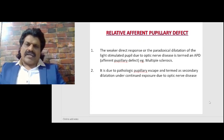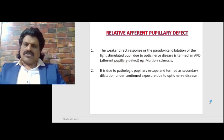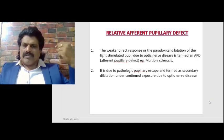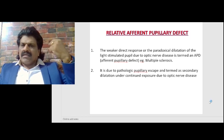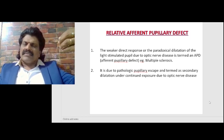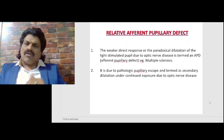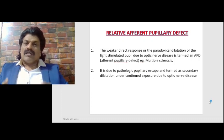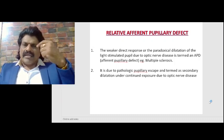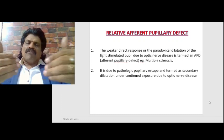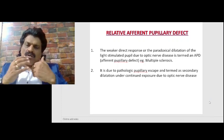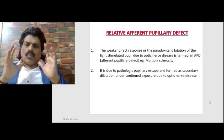So what happens if the afferent pathway — the second nerve — gets affected? In relative afferent pupillary defect, there is a weak direct response. When we throw light, if the second cranial nerve is affected on one side, the light is not able to pass sufficiently through that optic nerve because of optic neuritis or demyelination, especially in multiple sclerosis. So the pupils constrict both directly and consensually, but it will be weak because the afferent pathway is not well myelinated. There is a weaker direct response.